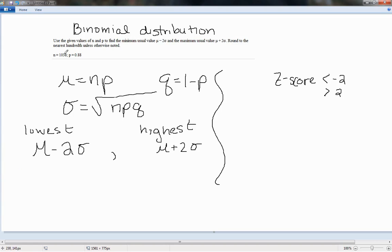So here we have our n is 1,038 and our p is .88, which makes our q equal to .12.